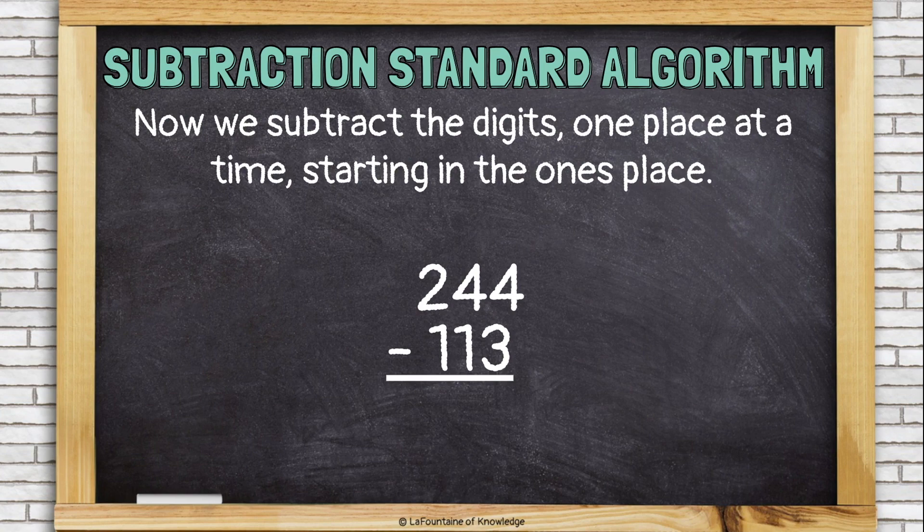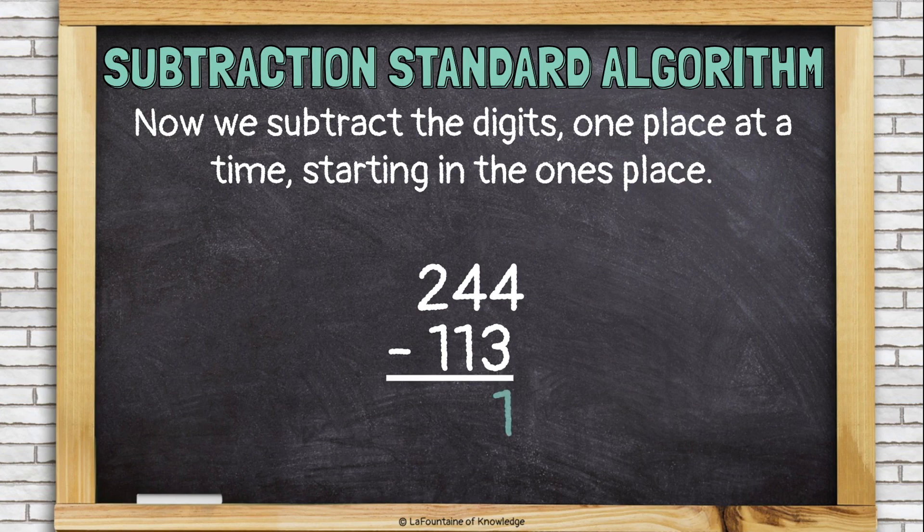Now, we'll subtract the digits, one place at a time, starting in the ones place. So, we have four minus three, which is one.